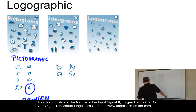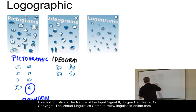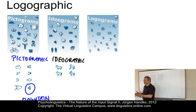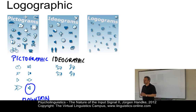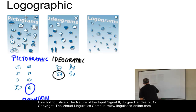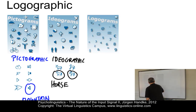The next type is called ideographic. In ideographic writing systems, the logographic symbols are also related to the concepts, however this time in terms of ideograms. Unlike pictographs, the shape of the ideographic symbol is not a direct representation but an associative representation of a concept. Ideographs are often mixed with pictographs. For example, here in the Egyptian hieroglyphic system we have the ideograph for horse as contrasted with the ideograph for donkey.